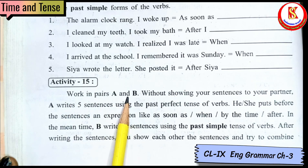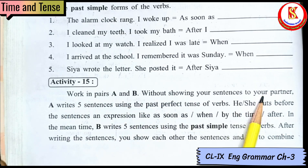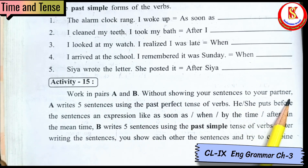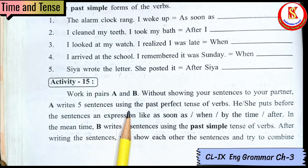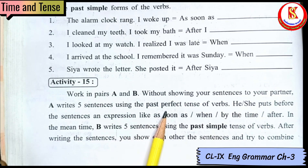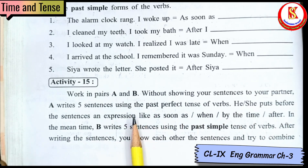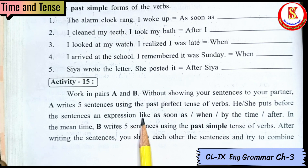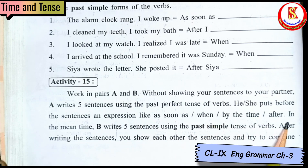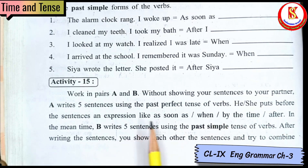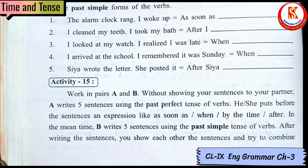Activity 15: Work in pairs A and B. Without showing your sentences to your partner, write 5 sentences using past perfect. Use coordinators like 'as soon as', 'when', 'by the time', 'after'.